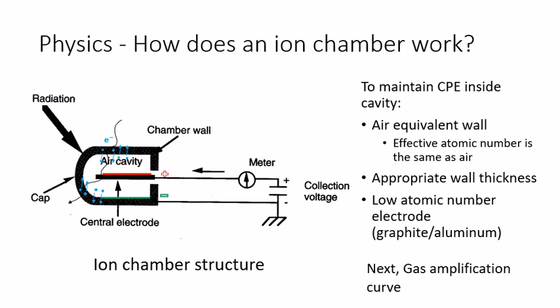In addition, the dimension and materials of the central electrode also need to comply with the CPE condition. That's why, preferably, it is made of low atomic number material, such as graphite or aluminum, which is closer to air than other conductors made of metal.